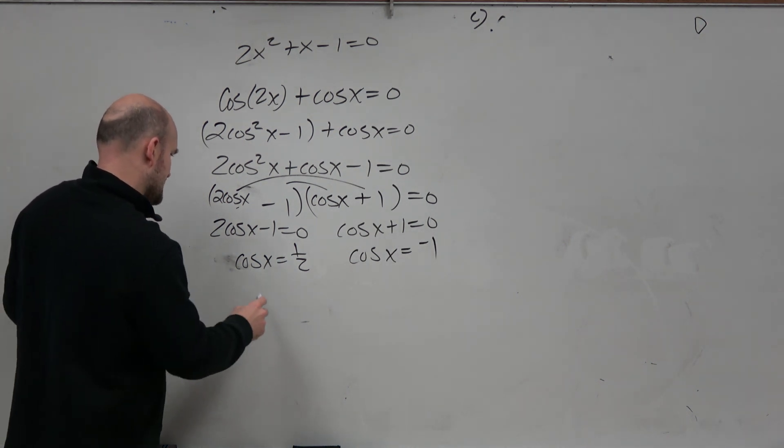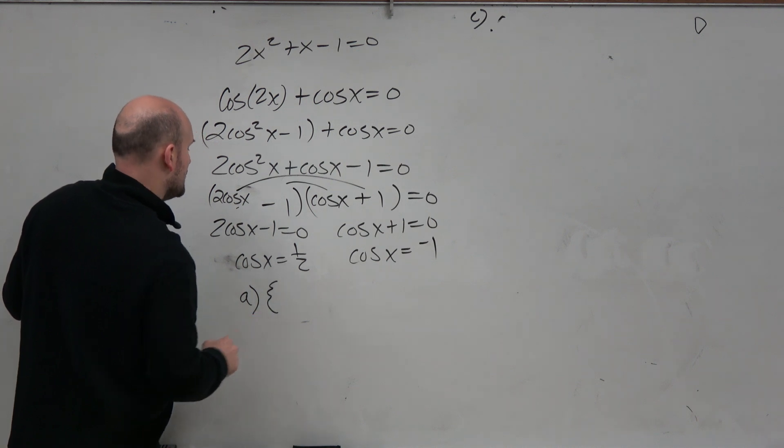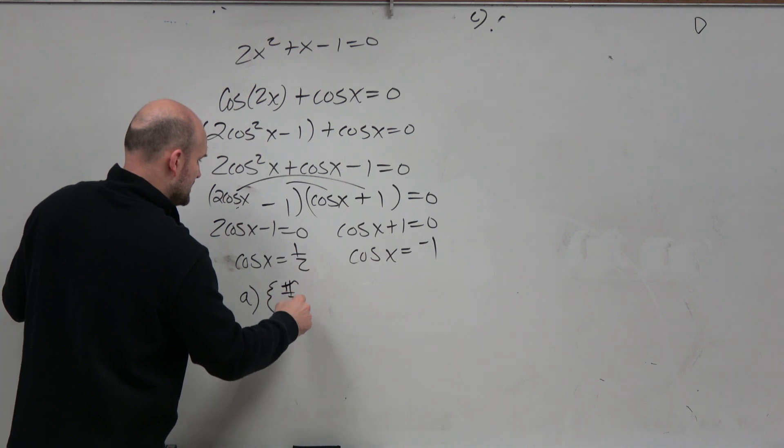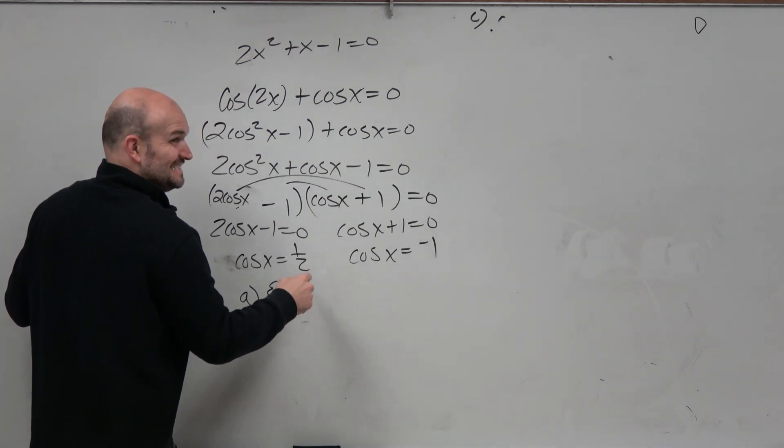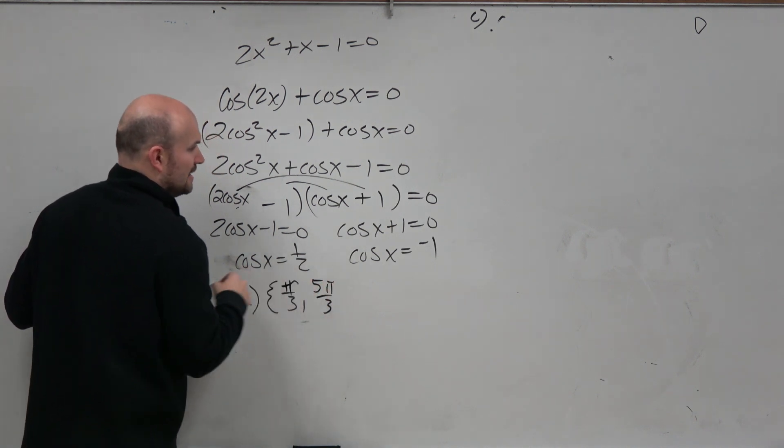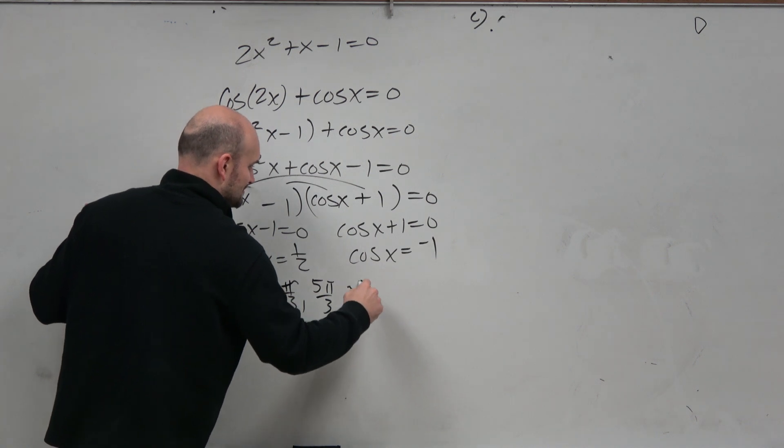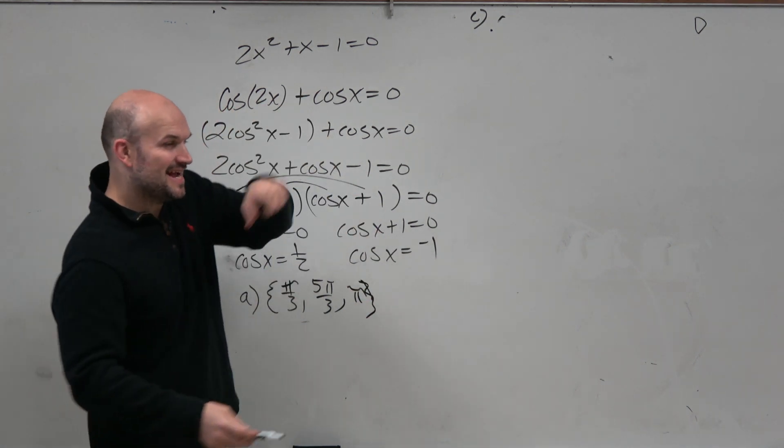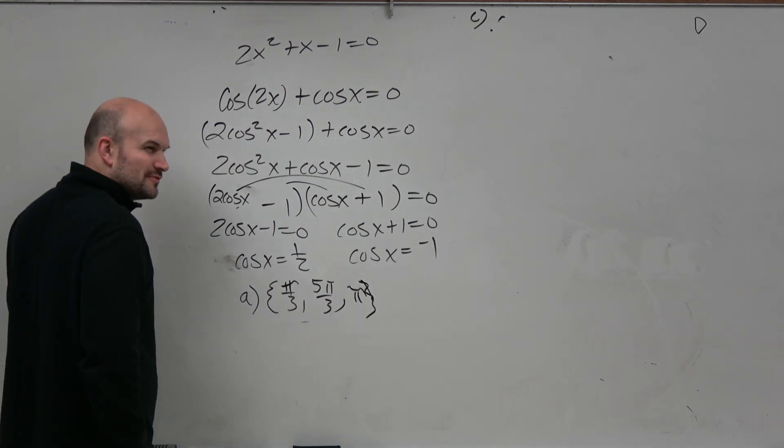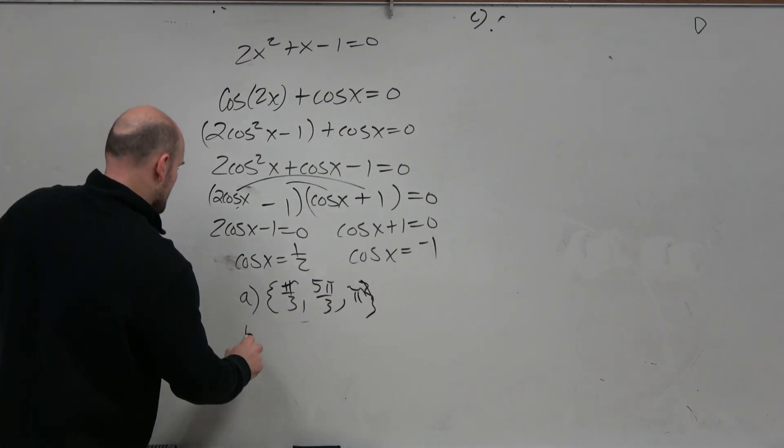For all solutions, I'm looking on the unit circle. When is cosx equal to 1/2? Cosine of x is going to be π/3 and 5π/3, good. And then cosine equals negative 1 at? Pi. Right, negative 1 comma 0, so it's at π. What did you say, 3π/2? At 3π/2, sine equals negative 1.